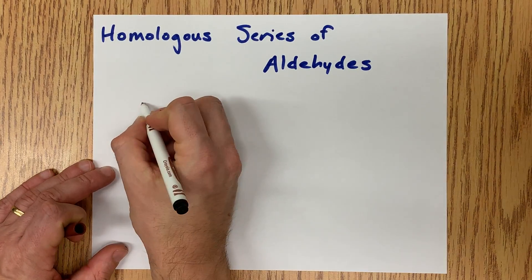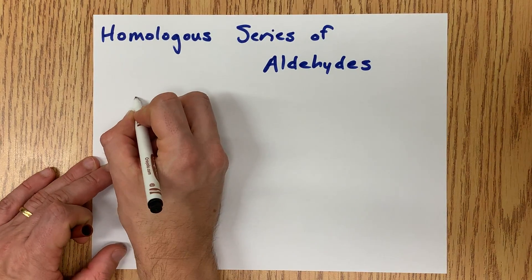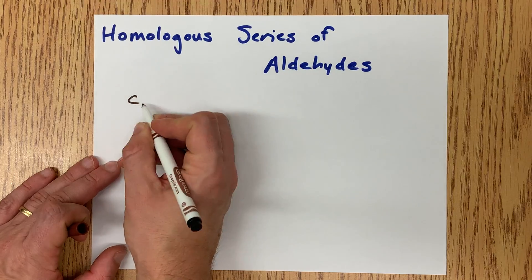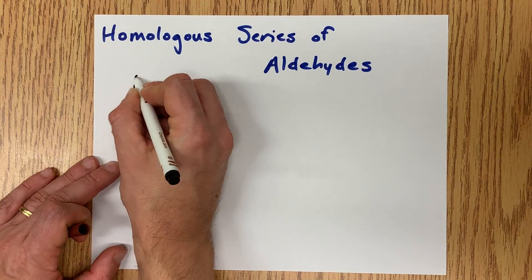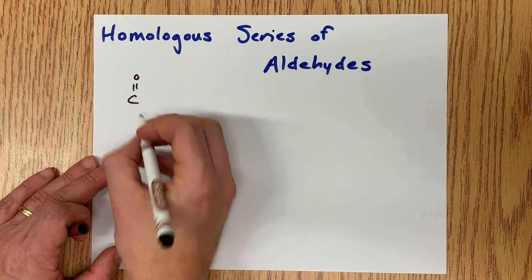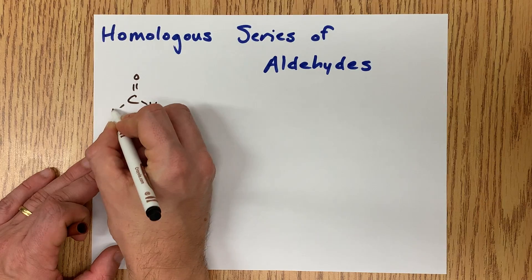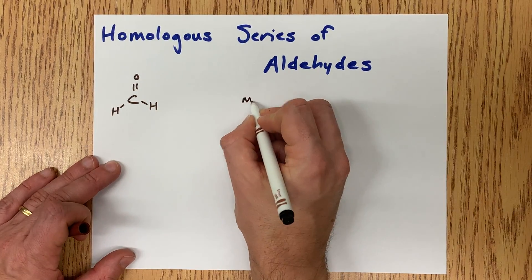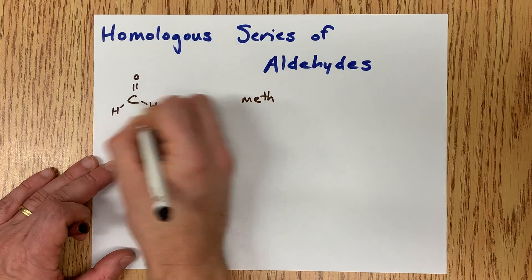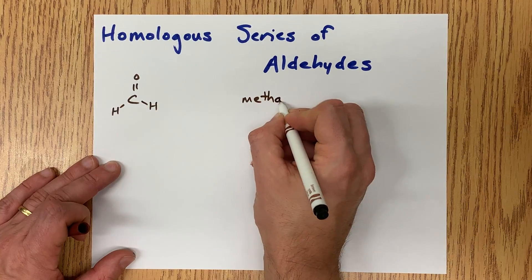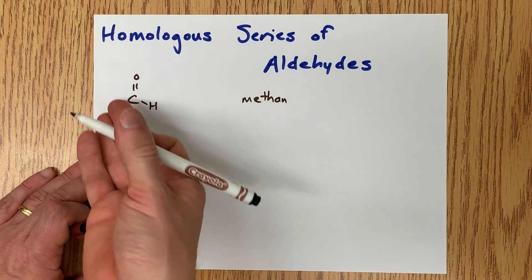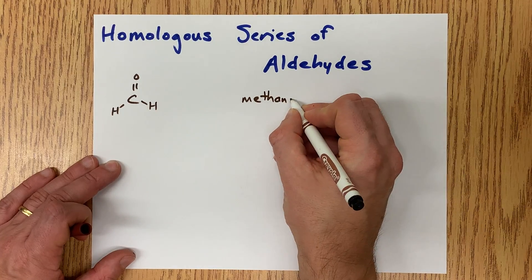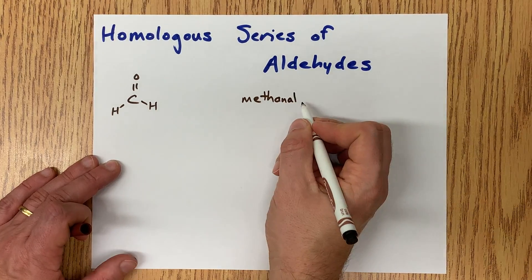The homologous series of aldehydes starts with the simplest aldehyde, which is a single carbon atom that has a double bonded O and hydrogen on either side. This is a one carbon chain, so it's 'meth'. There are no other carbons, so it's 'an', and it's an aldehyde, so it's methanal.